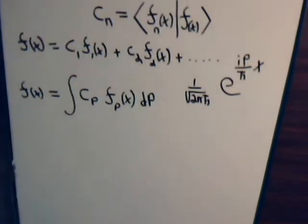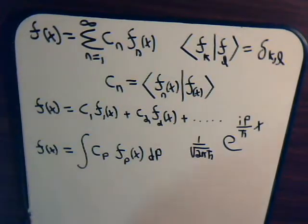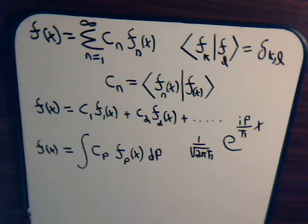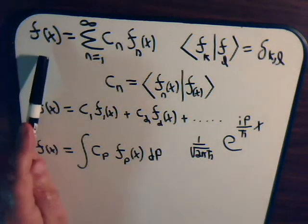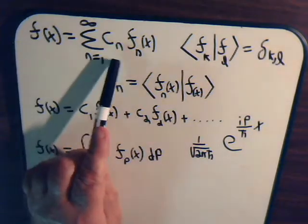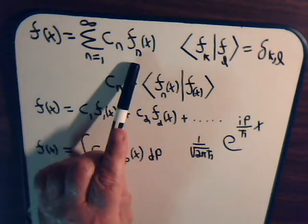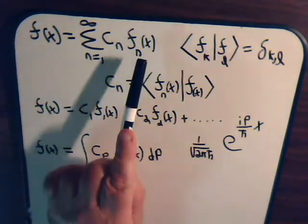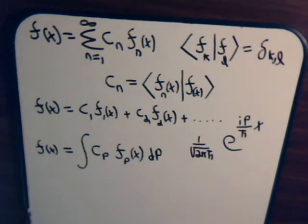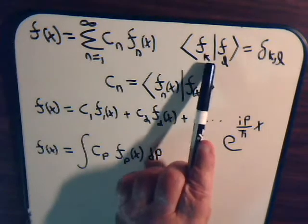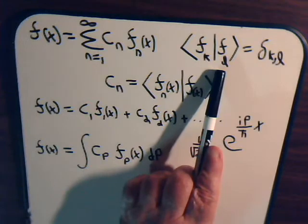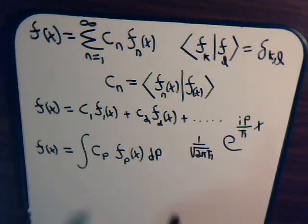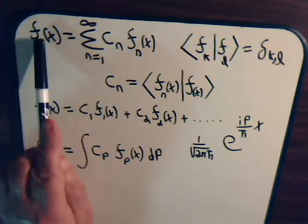In the last video we said: suppose we have some functions that are linearly independent and they're complete. That means any function can be expressed as a linear combination of these complete set of linearly independent functions. Then we said, if these functions are also orthonormal — if they satisfy this condition — then this coefficient is equal to the inner product of this with this.